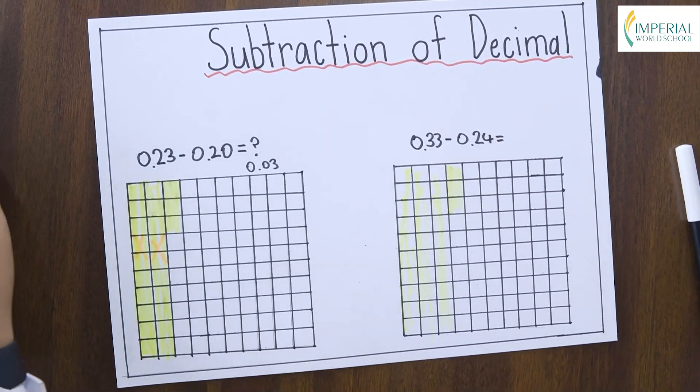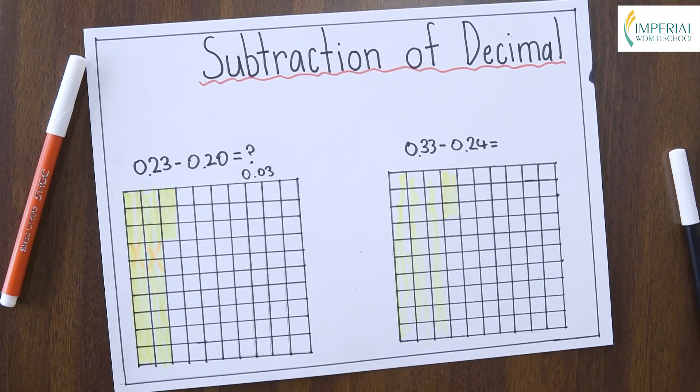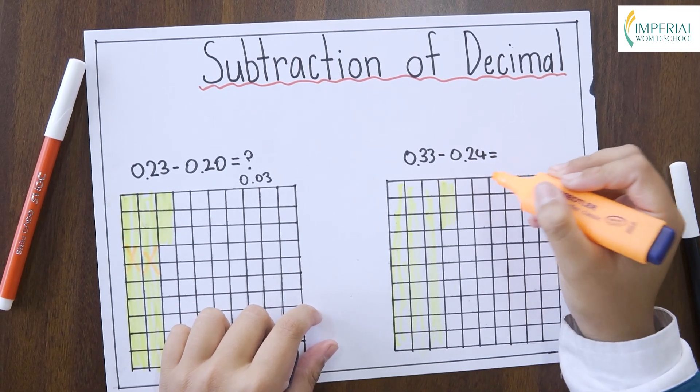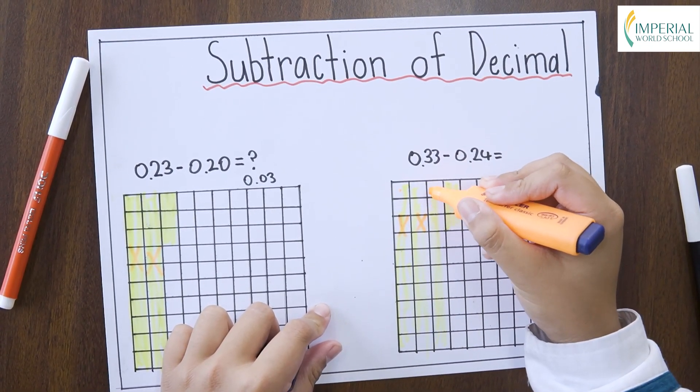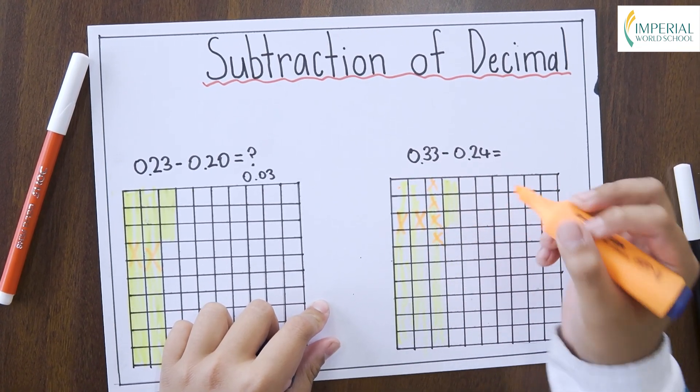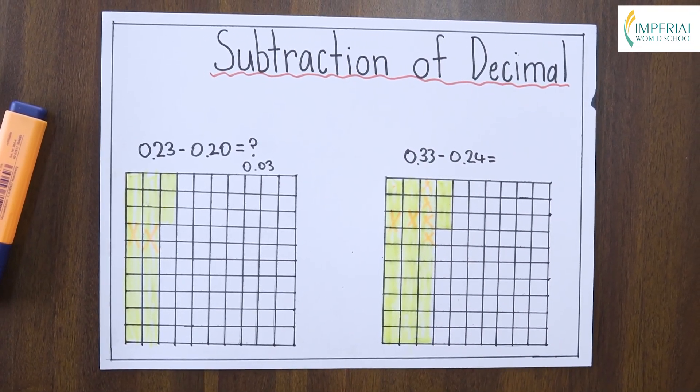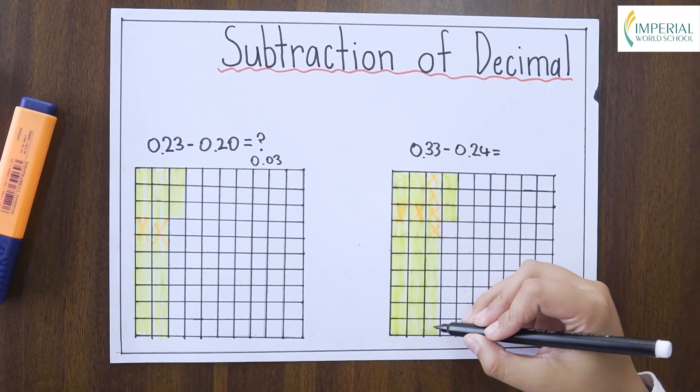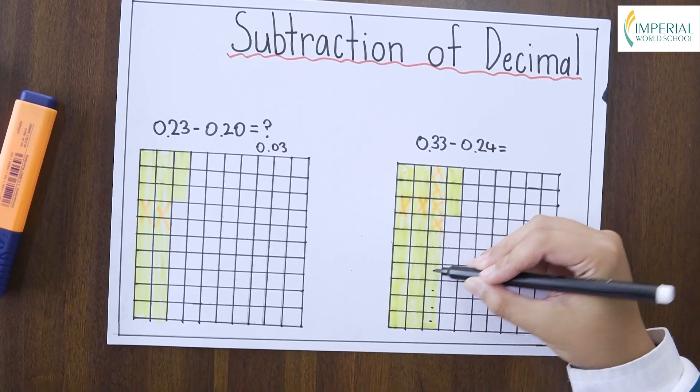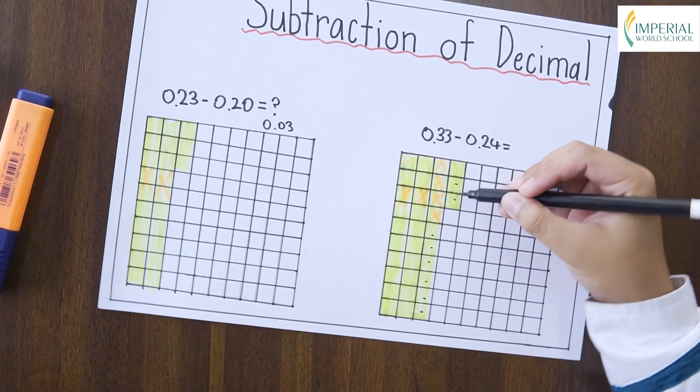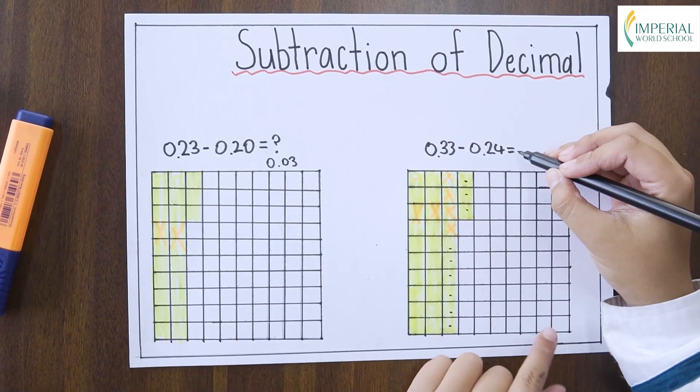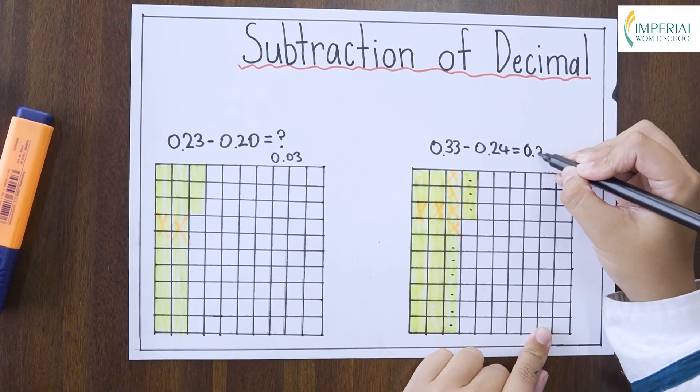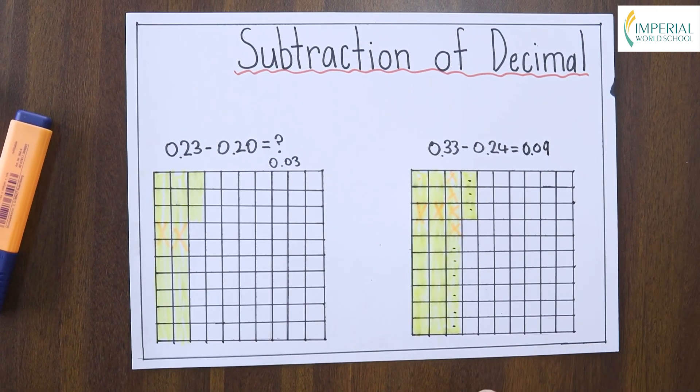Now we will have to find the difference. And 0.24 has two tenths, so we cancelled two tenths and four hundredths. Now the remaining will be our difference. Now let's count. One, two, three, four, five, six, seven, eight and nine. So the difference is 0.09. So we will write 0.09 here.